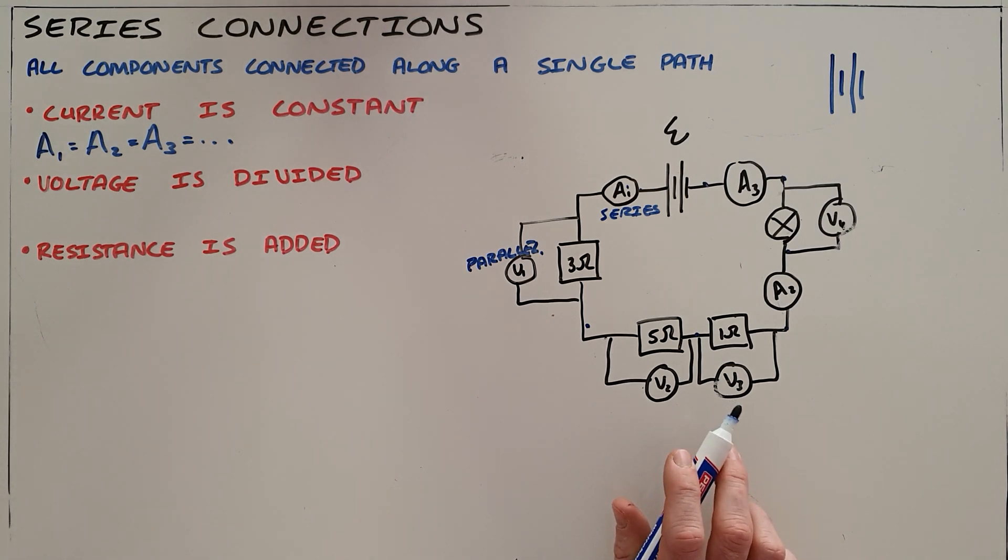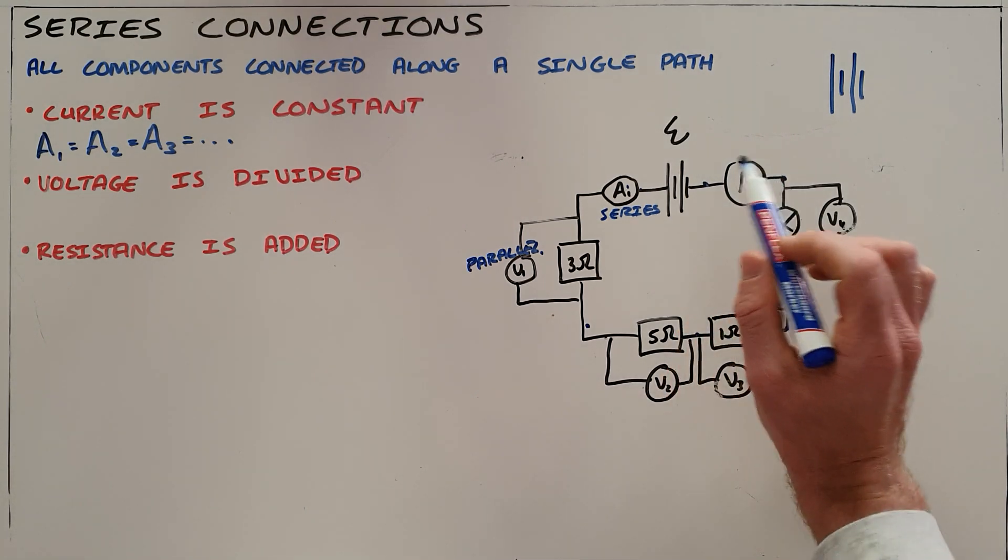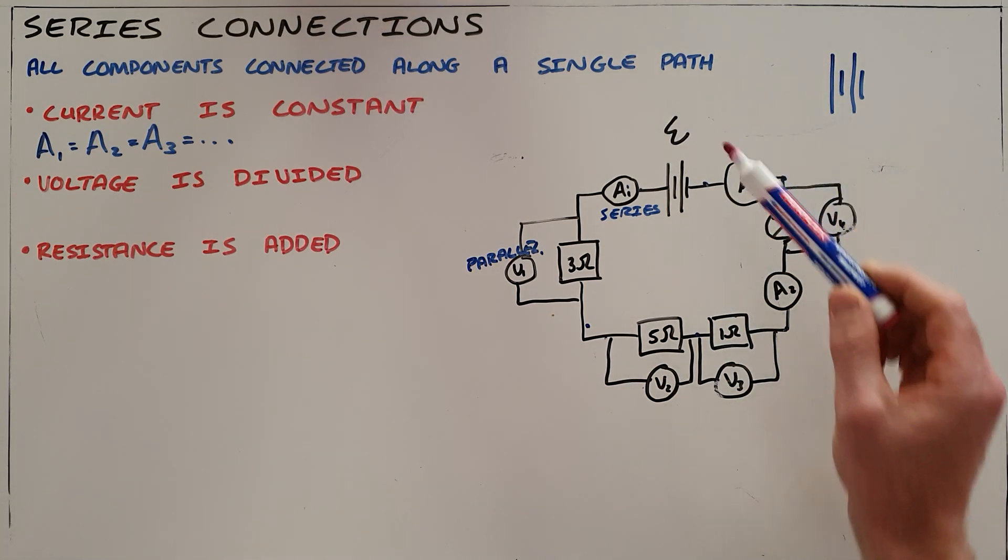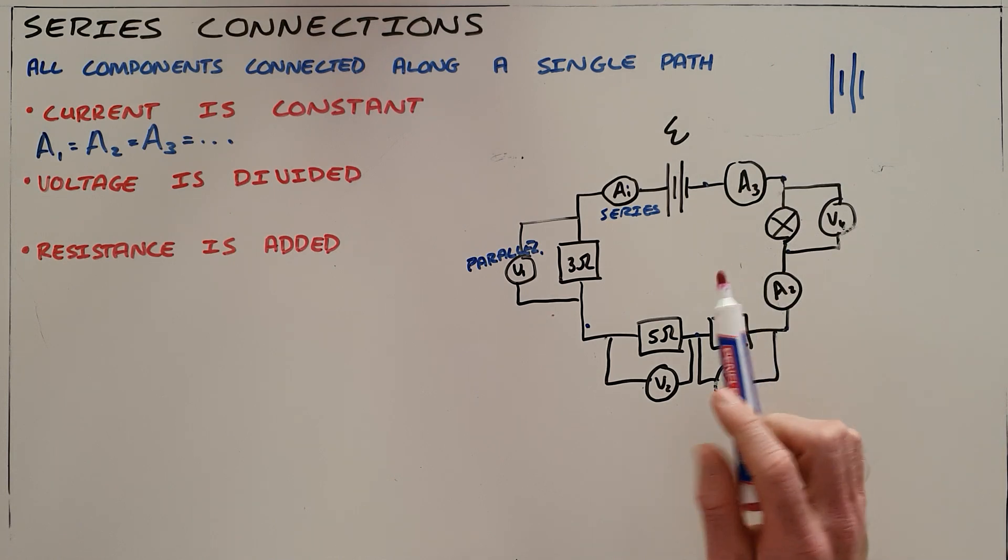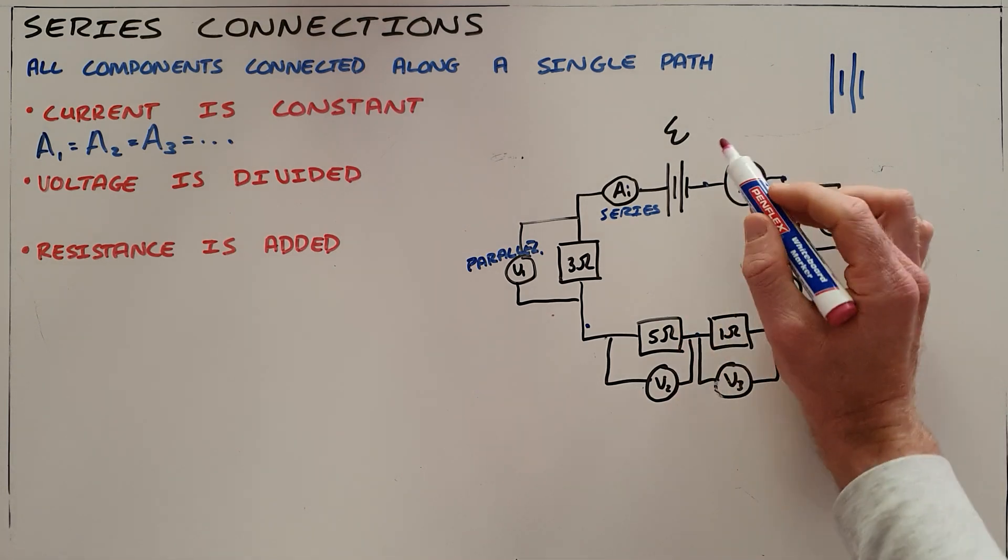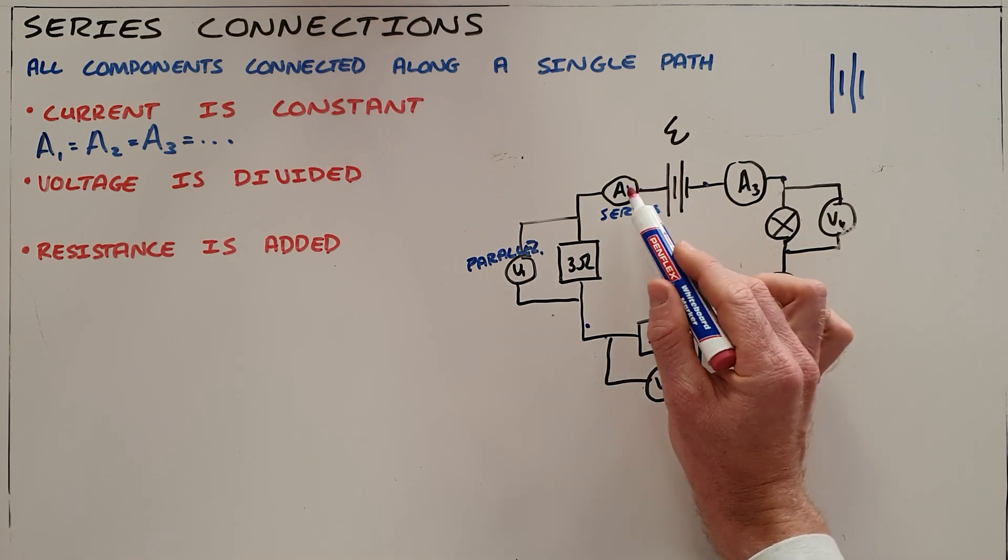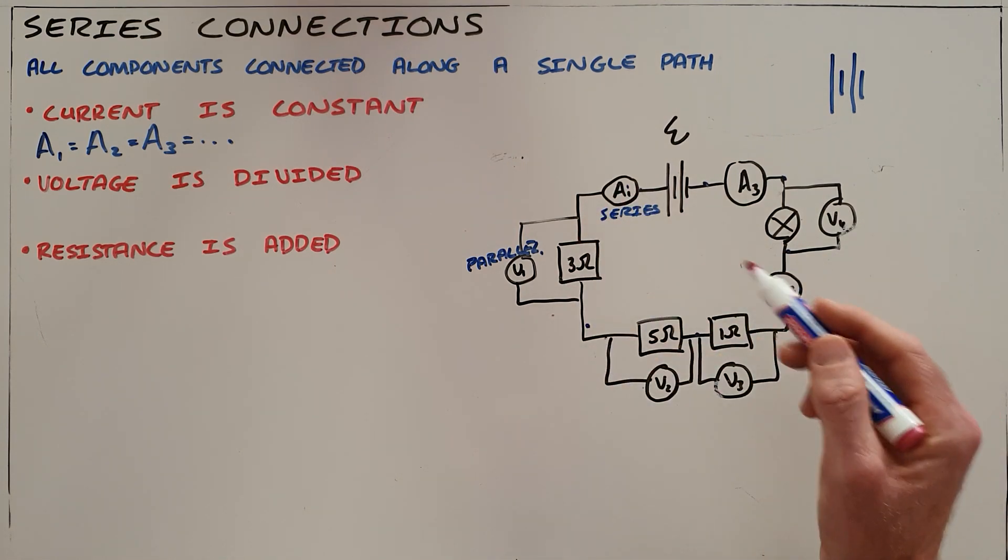The second rule is that voltage is divided. We know that the battery is providing the electromotive force for the charge to flow around the circuit. We know that essentially the battery is providing energy and that energy must be used up at the resistors in the circuit.